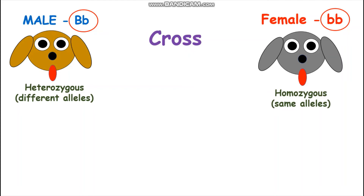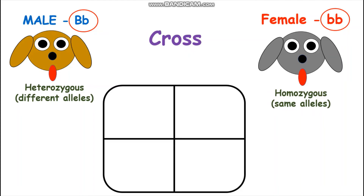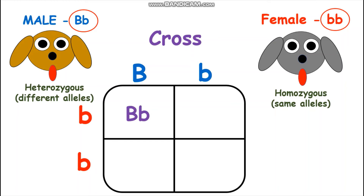So back to Punnett Squares. To make a Punnett Square, just draw a square with four sections like this one. Next, put the male's alleles on top of the two sections of the square. So his BIG B will come here and his LITTLE B will come here. For the female's genotype, her alleles will come to the side of the square — so her LITTLE B will go there and her second LITTLE B will go there. To find all the possible genotypes of the cross, combine the alleles of both dogs in each section. So the first section will be BIG B, LITTLE B. The second will be LITTLE B, LITTLE B. The third will be BIG B, LITTLE B. And the fourth will be LITTLE B, LITTLE B.